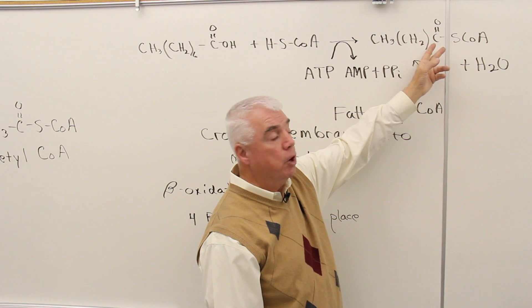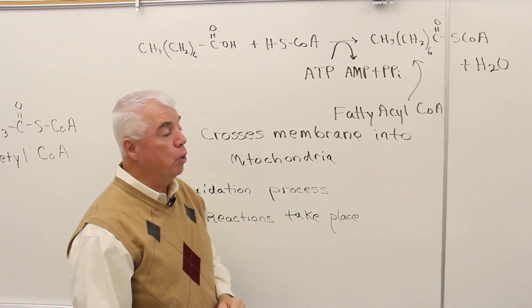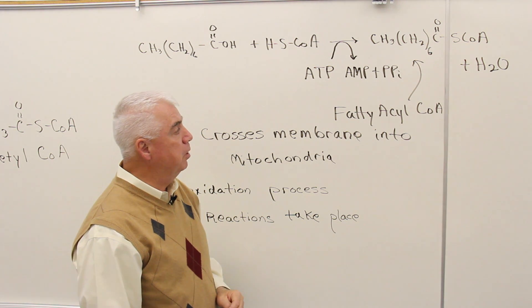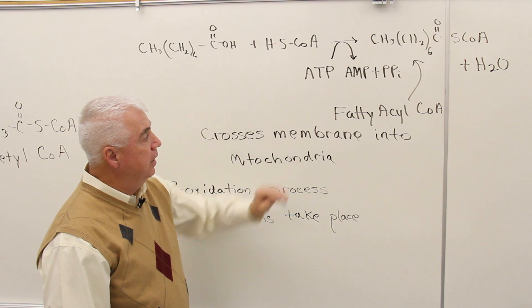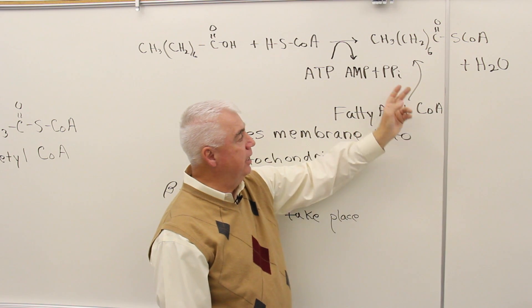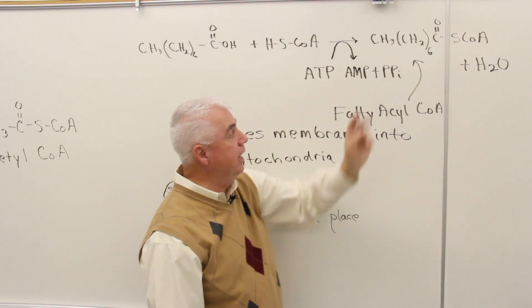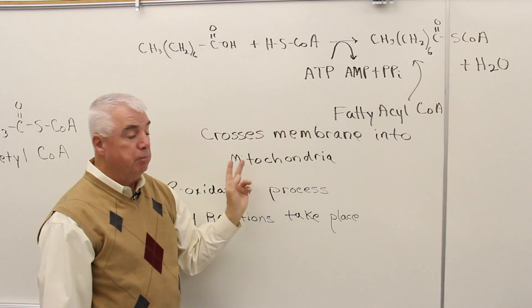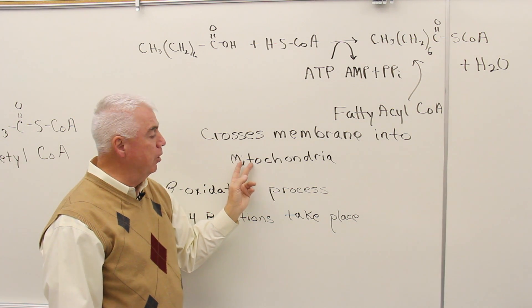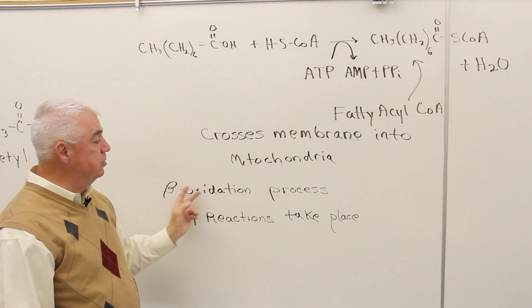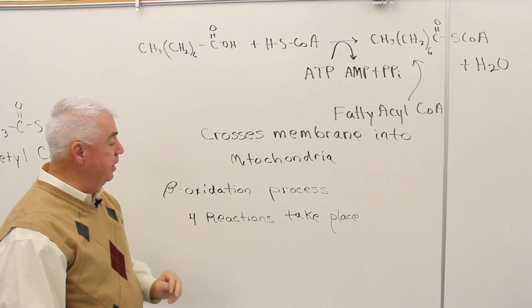Over here, the OH is gone. Now it's a coenzyme A derivative plus a water molecule. This fatty acid, fatty acyl CoA, can now permeate the mitochondrial membrane. Once it's inside, the beta oxidation process can take place.